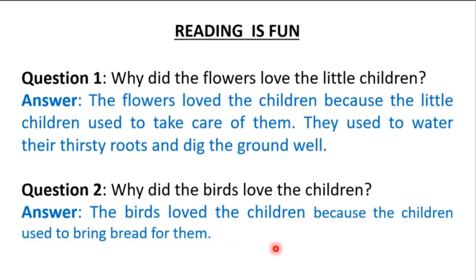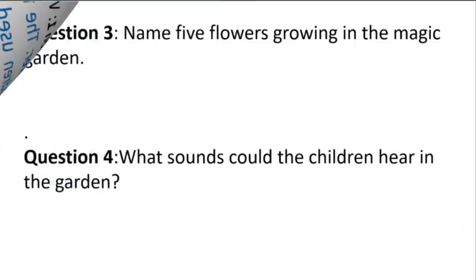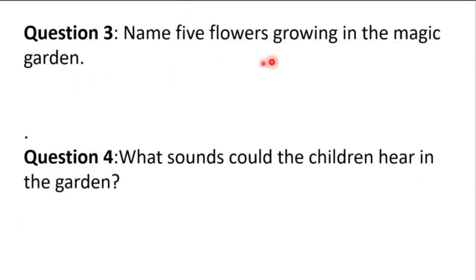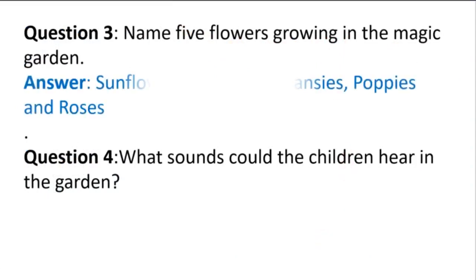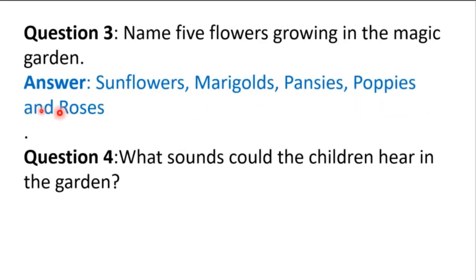Next question: Name five flowers growing in the magic garden. The five flowers growing in the magic garden are: sunflowers, marigolds, pansies, poppies, and roses. Next question: What sound could the children hear in the garden?